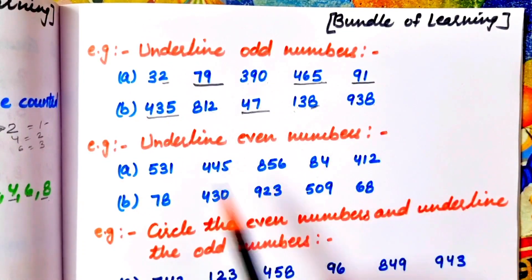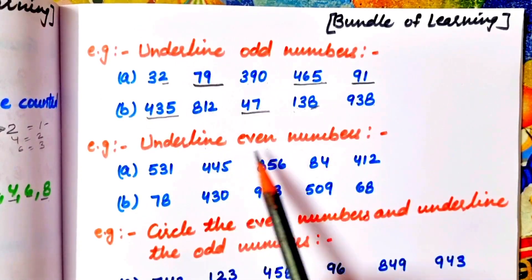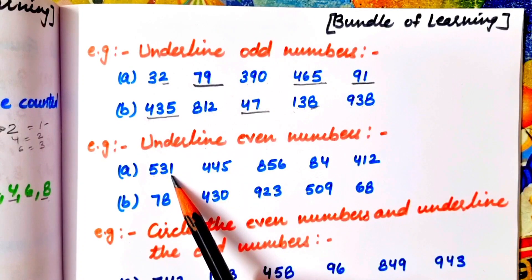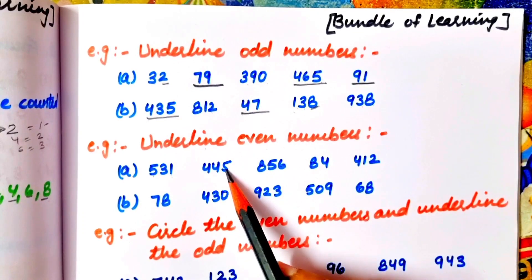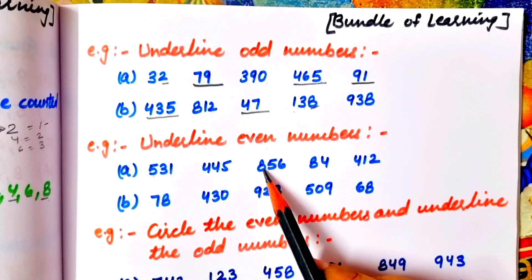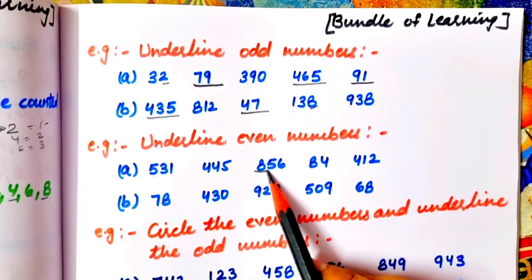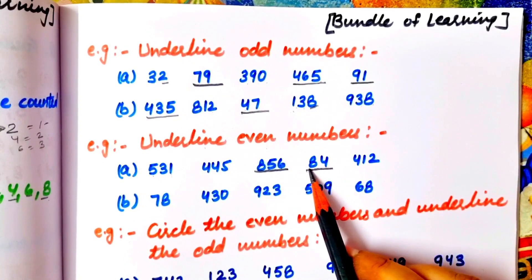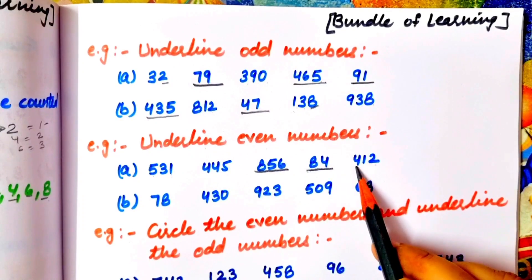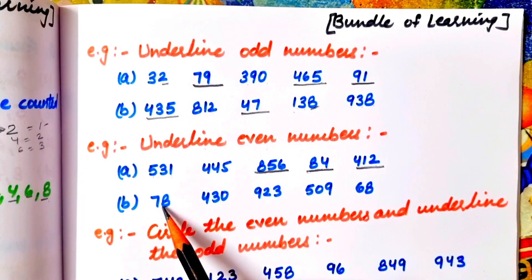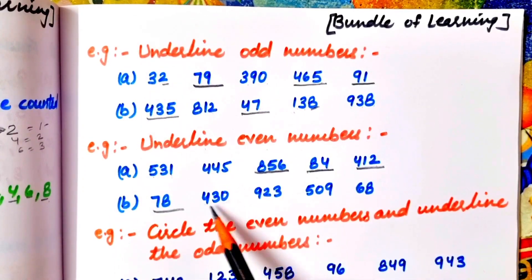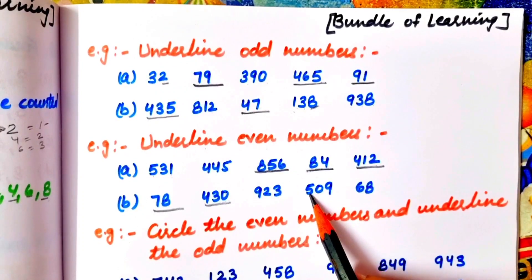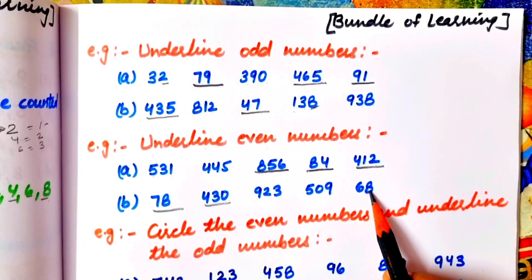Next, we underline the even numbers. 531: ones place is 1 — odd number, not even. 445: ones place is 5 — odd number, not even. 856: ones place is 6 — even number, underline. 84: ones place is 4 — even number. 412: ones place is 2 — even number. 78: ones place is 8 — even number. 430: ones place is 0 — even number. 923: ones place is 3 — odd number. 509: ones place is 9 — odd number. 68: ones place is 8 — even number.